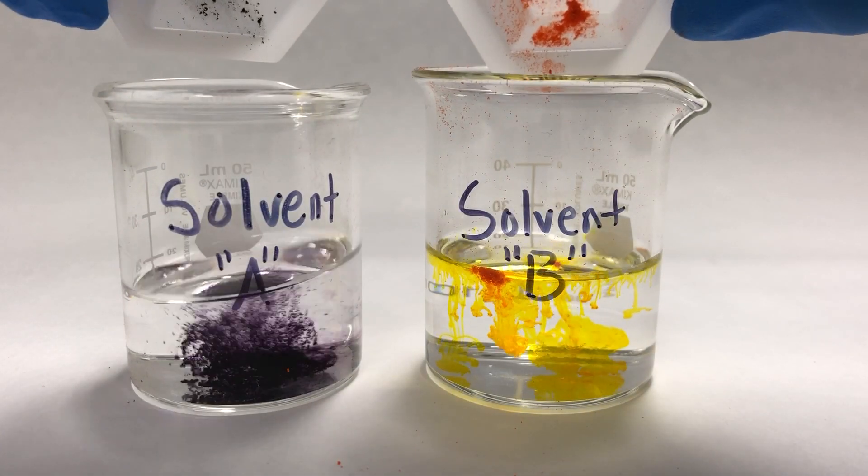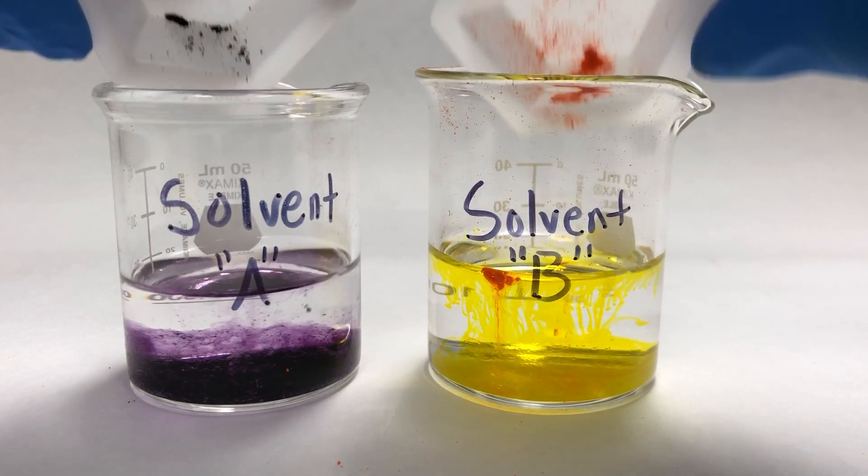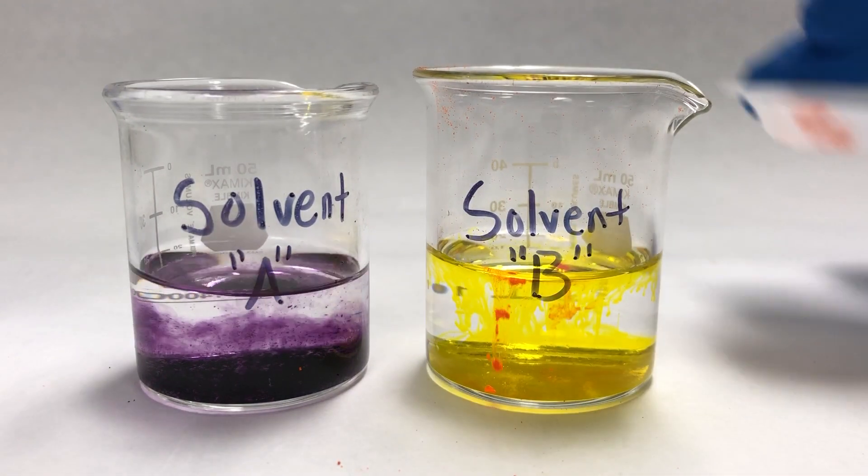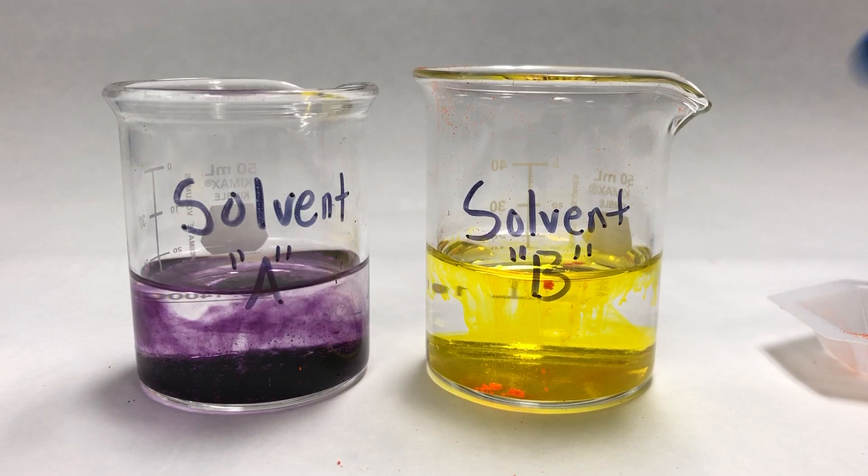As you can see, the black powder, or black solute, can only be dissolved in solvent A, and the yellow solute can only dissolve in solvent B.